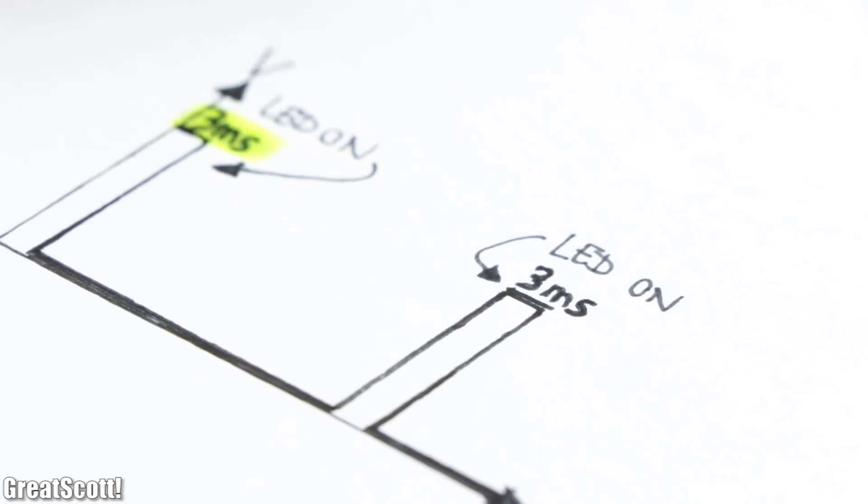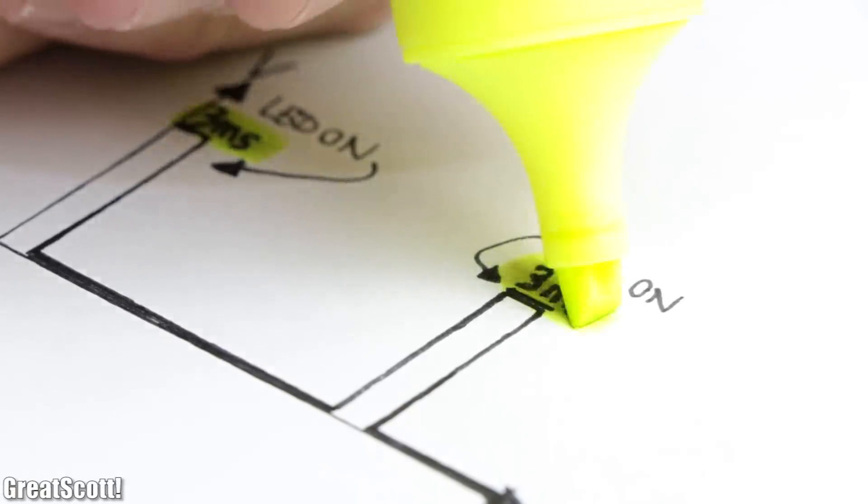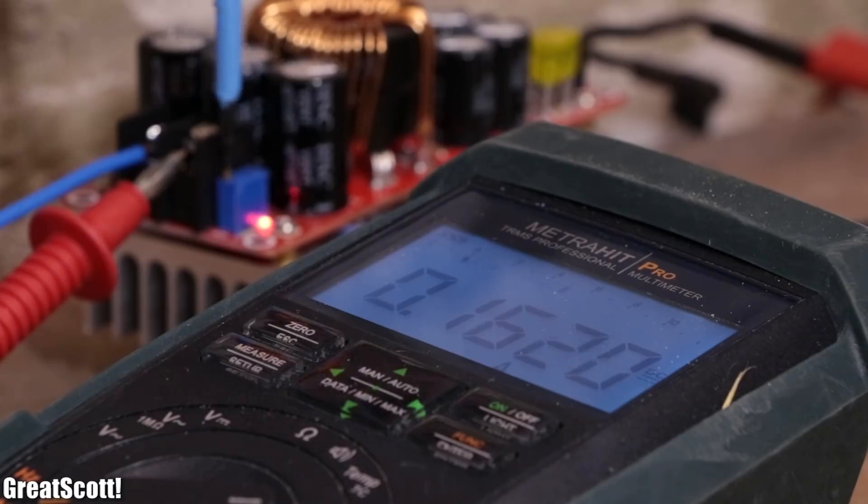As you can see, the stroboscope effect is definitely there, but while looking from the outside once again, the light source seems dimmer. The reason is that it is only illuminated for a small amount of time, which on the other hand means we can increase its voltage and current flow a bit to compensate for that.